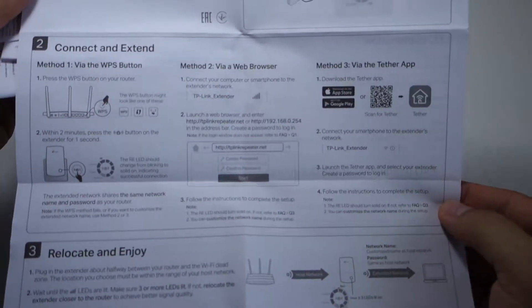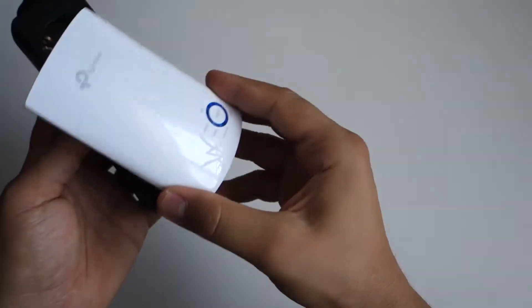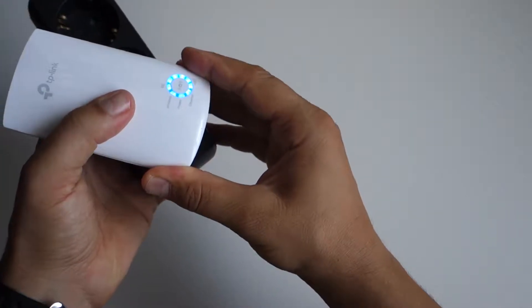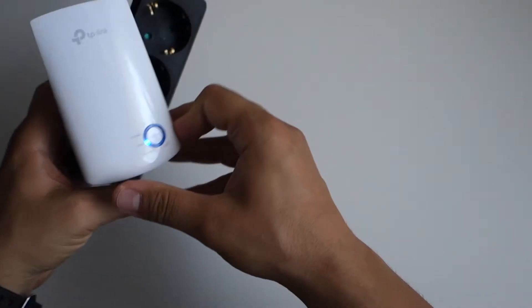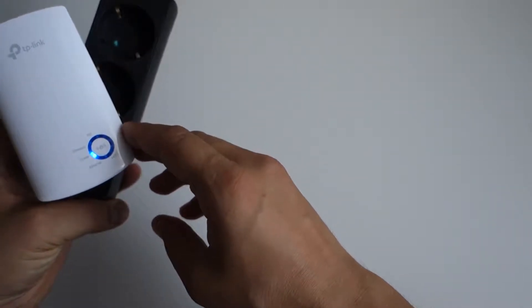Or you can press the WPS button on your Wi-Fi router and the button on this extender, and it will connect automatically to your Wi-Fi router. It's very simple.